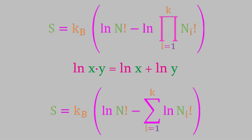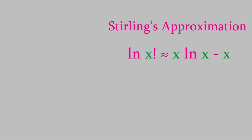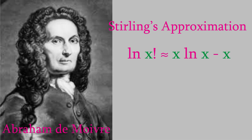This expression is still difficult to use since each ni is quite large. Fortunately, for large numbers there's a good approximation: the logarithm of x factorial is approximately equal to x times the logarithm of x minus x. This is known as Stirling's approximation, named after the Scottish mathematician James Stirling, although it was first derived by his collaborator, the French mathematician Abraham de Moivre, in 1730. It's not very accurate for small numbers, but it's a reasonable approximation when x is large.